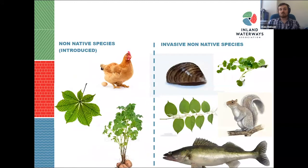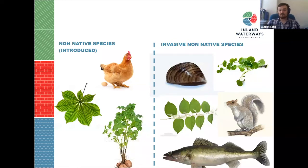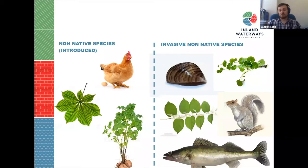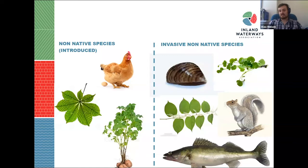Here are some examples of non-native species versus invasive non-native species. On the left we have species brought over for produce such as chickens, cows, and pigs — all not native to Britain but introduced for that reason. We can also look at potatoes, corn, and wheat, all introduced to feed the population. These species tend not to have negative impacts and have the inability to spread massively.